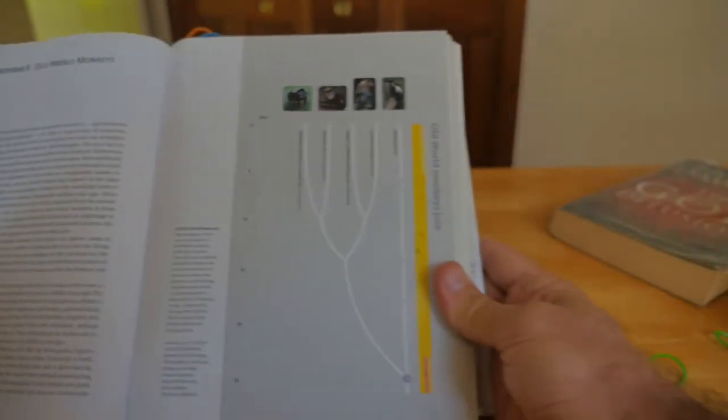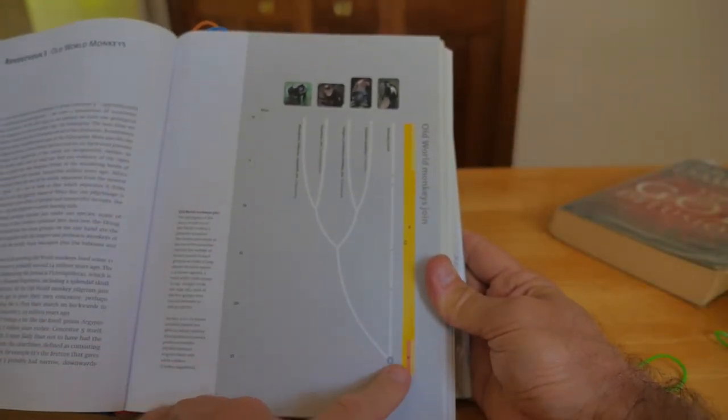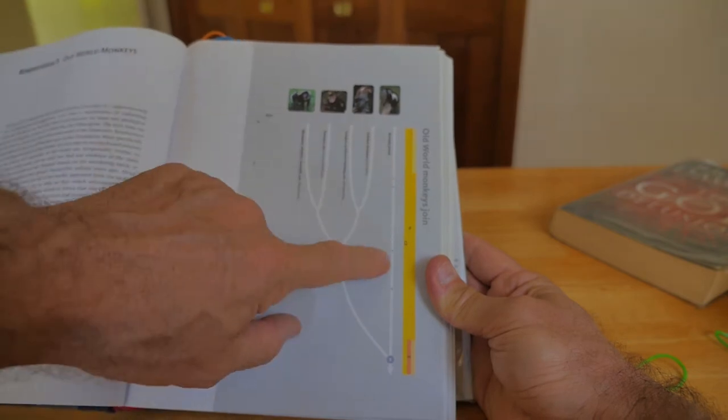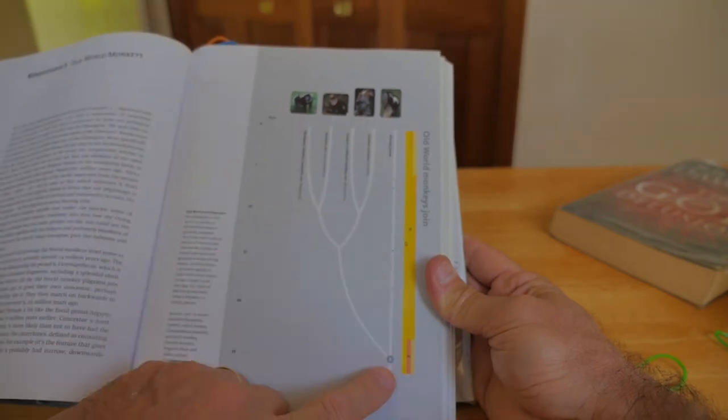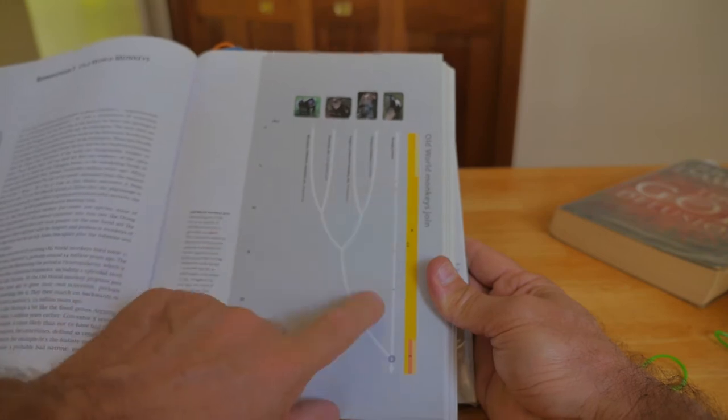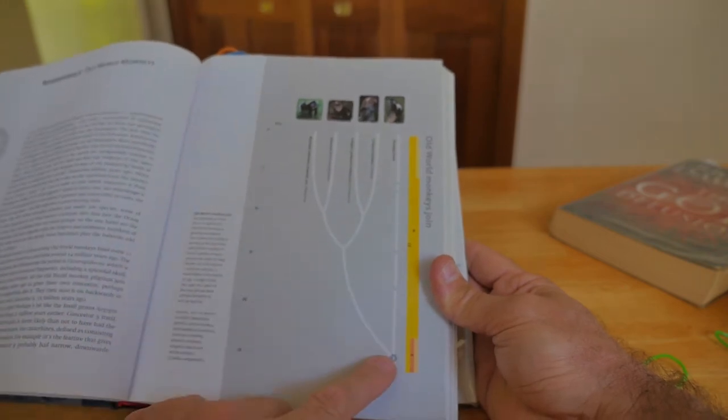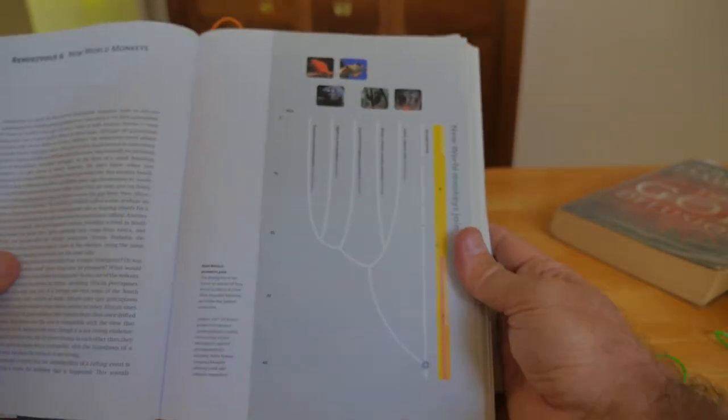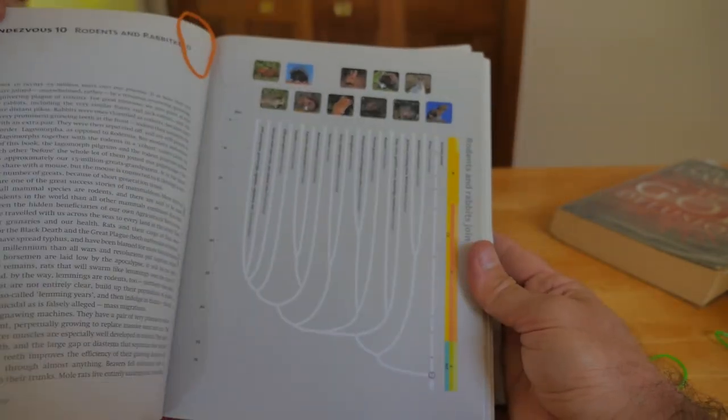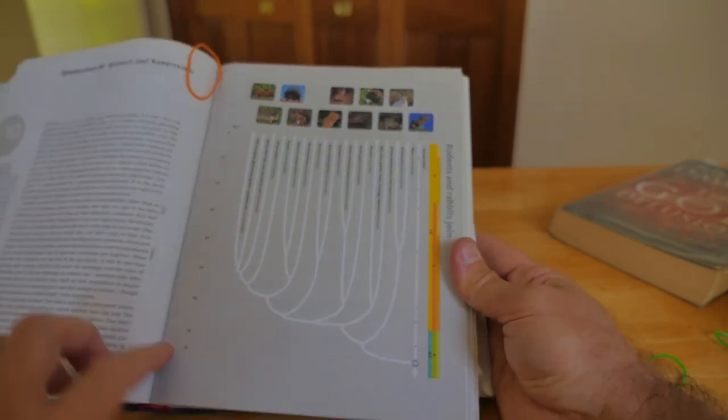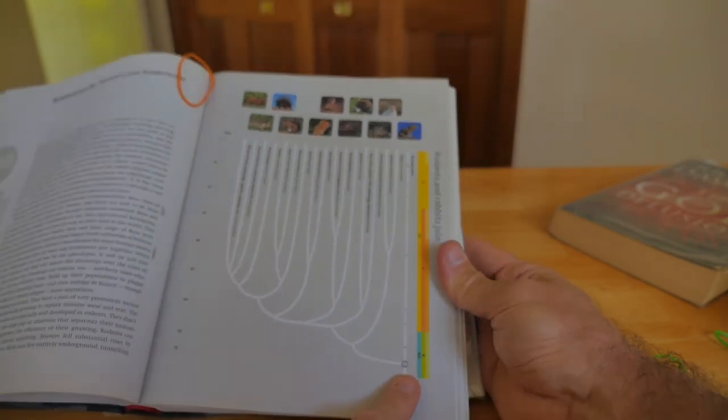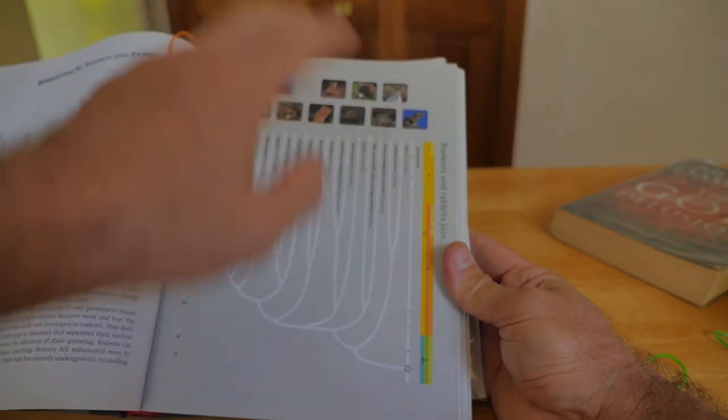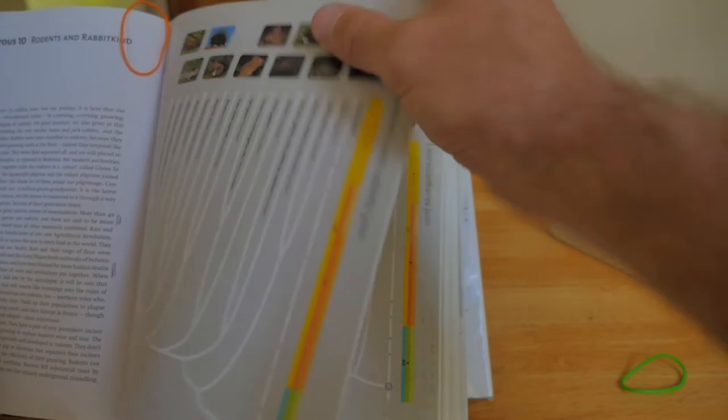Rendezvous number five, old world monkeys. And here we are. Chimps, gorillas, orangutans, new world monkeys—no, chimps, gorillas, orangutans, and then gibbons, and now old world monkeys. The next one is new world monkeys. And then the next one is rodents and rabbit kind, rendezvous number 10. So lots and lots. After something diverges from us, you can see it does all kinds of wonderful things and creates new critters here. Rabbits and rats, all lovely things.